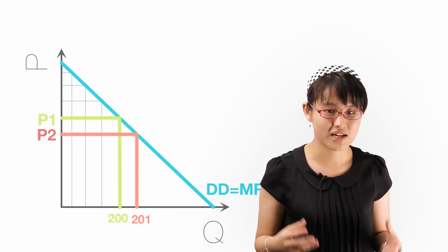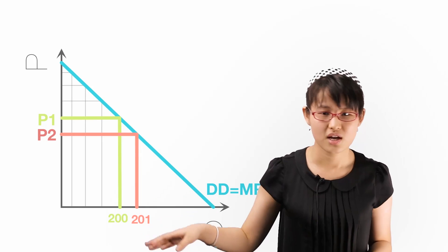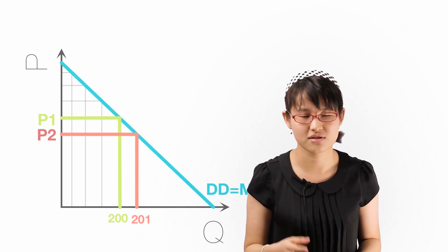So without price discrimination, I have to lower the price of all 200 goods just to sell the 201st good to this guy.